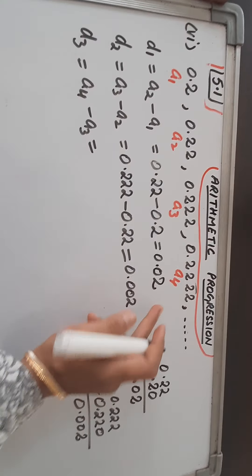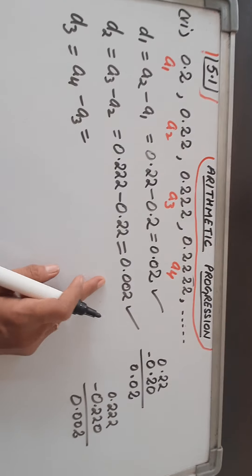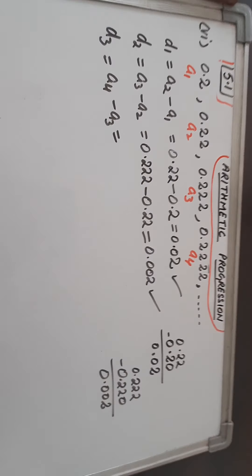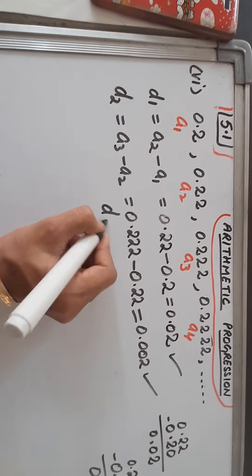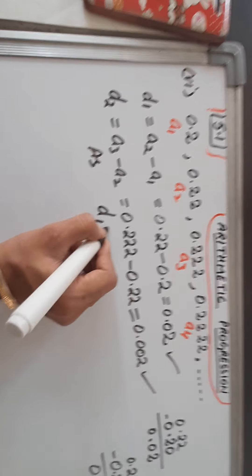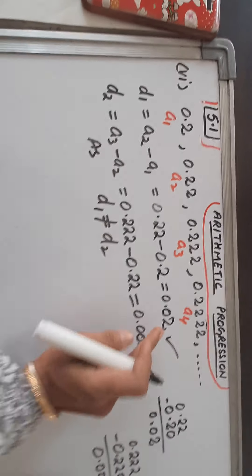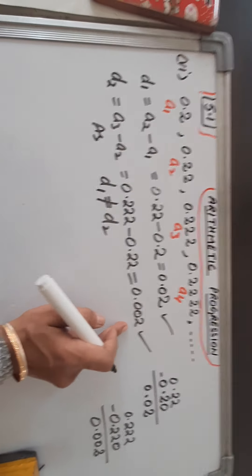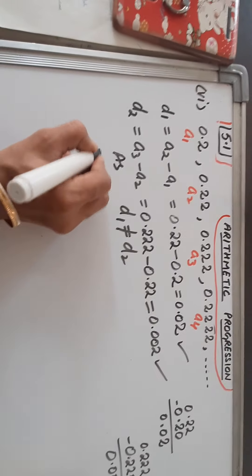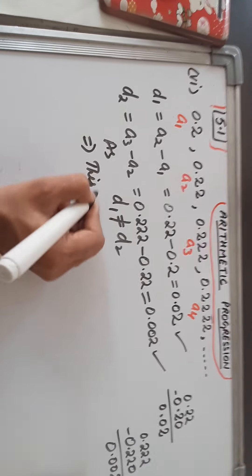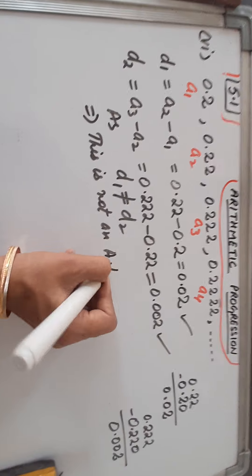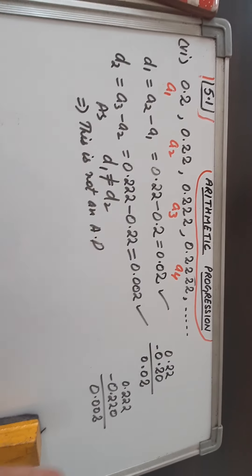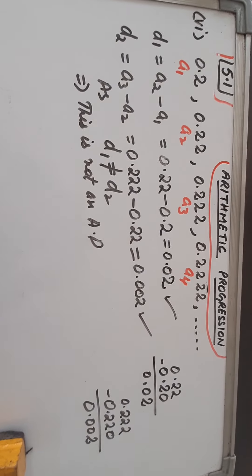As you can see, the first difference and second difference are not the same: 0.02 versus 0.002. So no need to calculate the third one. We can directly write D1 is not equal to D2, which implies this is not an AP. The question ends here — no need to solve further.